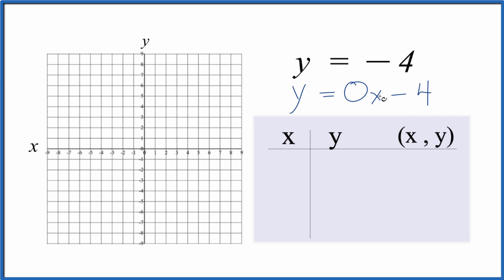Because now we could say, what if x were 0? So if we have 0 for x, 0 times 0, that's just 0. So y equals negative 4.